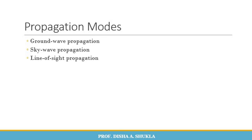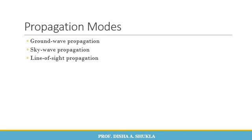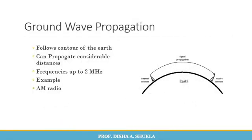Ground wave propagation is used for low frequency range transmission, mostly less than 1 MHz. This type of propagation employs the use of large antennas of an order equivalent to the wavelength of the waves, and uses the ground or troposphere for propagation. Signals over a large distance are not sent using this method. It causes severe attenuation which increases with increase in the frequency of the wave.